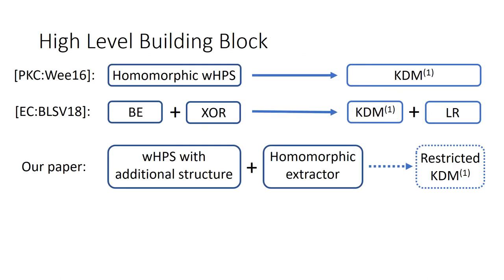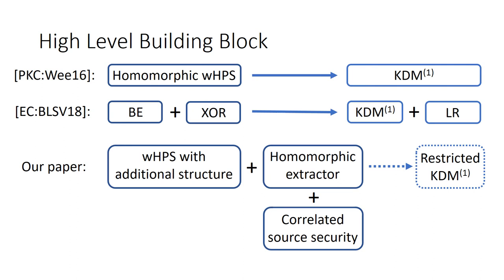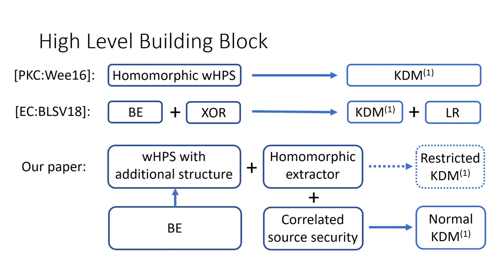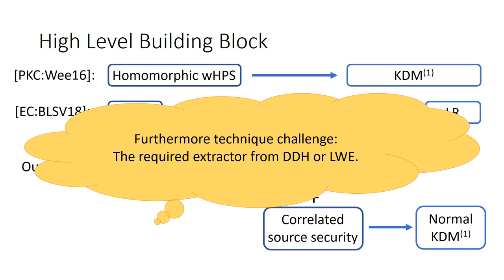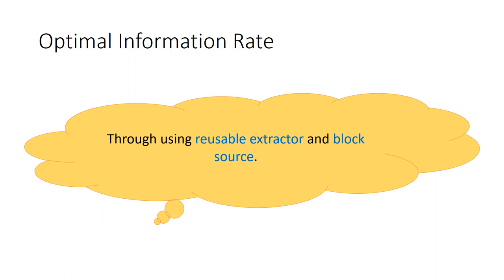Back to the high-level building block view, with leveraging the correlated source security of the extractor, we can achieve the normal KDM-1 security. Furthermore, we need to consider how to instantiate the required building blocks. First, we find that batch encryption already implies a weak HPS with three useful additional structures. Second, the required extractor can be constructed from DDH or LWE. Now we have obtained a KDM-circle PKE scheme from weak HPS and extractor. However, it is still far from our desired target of optimal information rate. So next, we consider how to improve the information rate through further using the reusable property and block source settings.